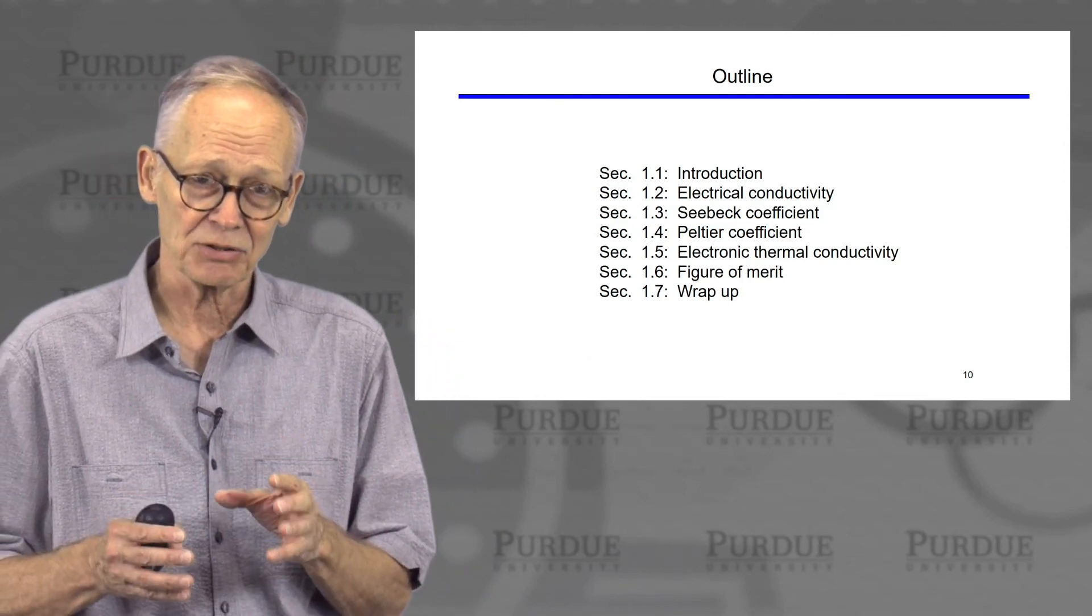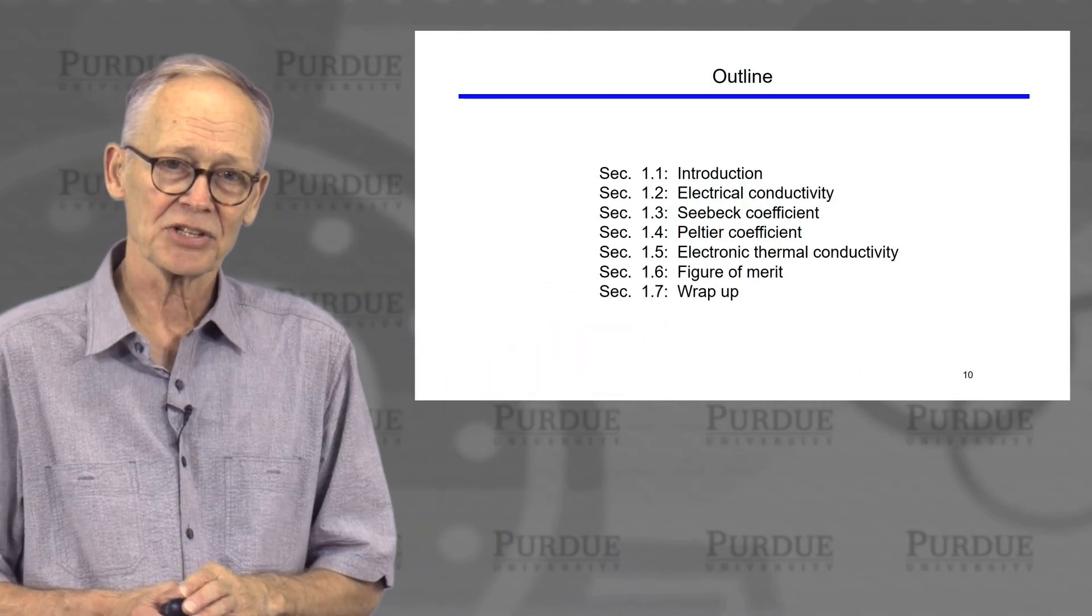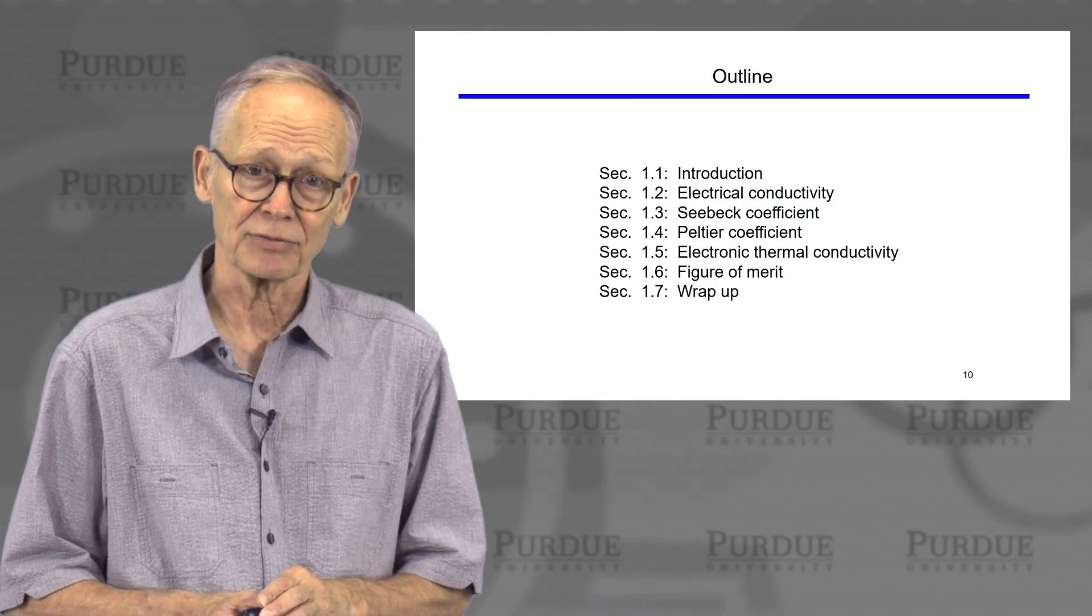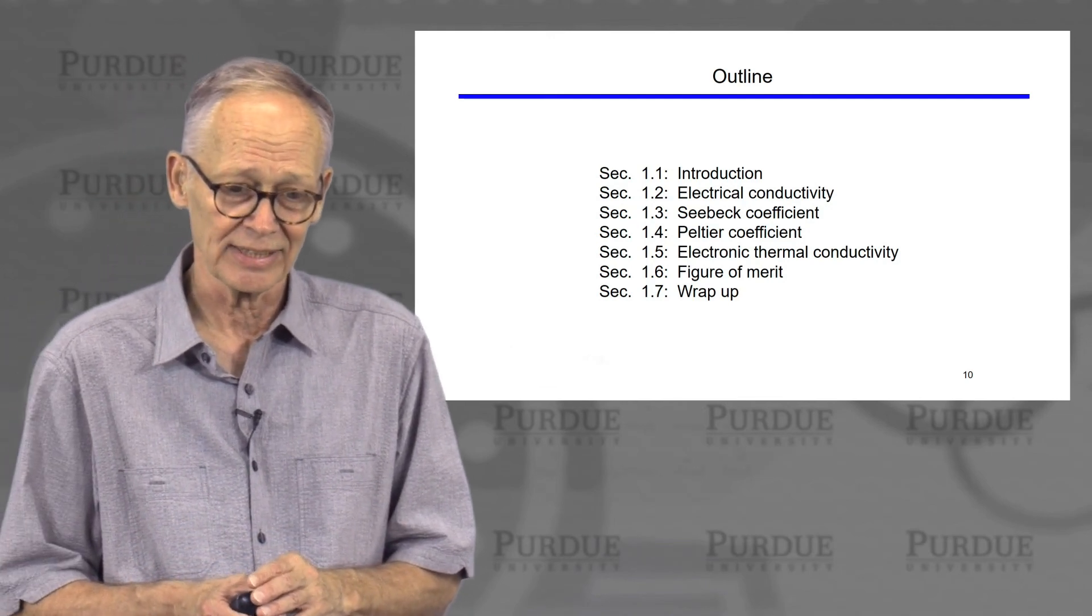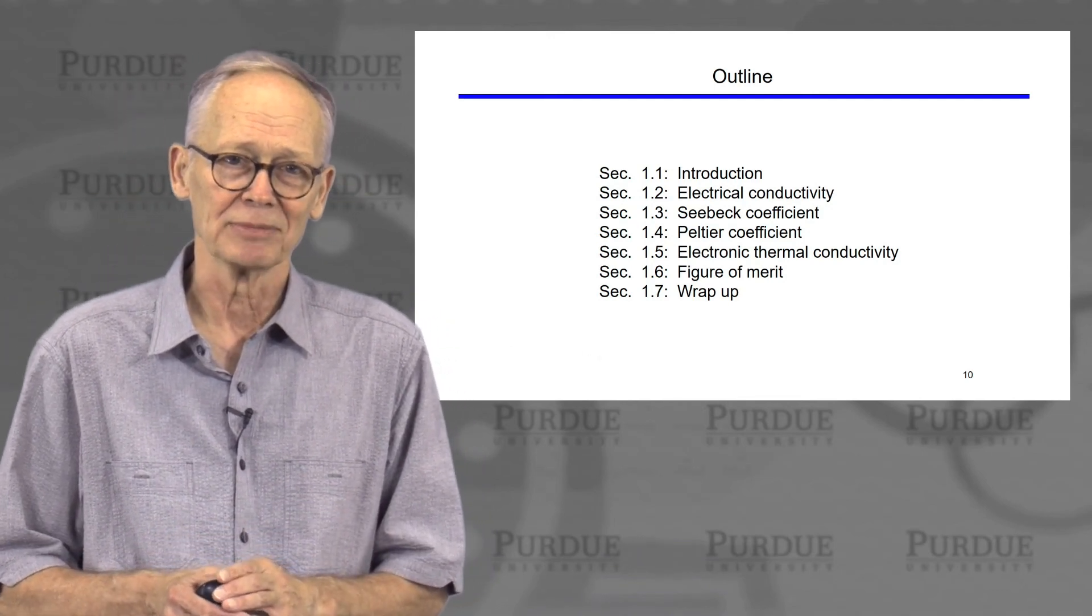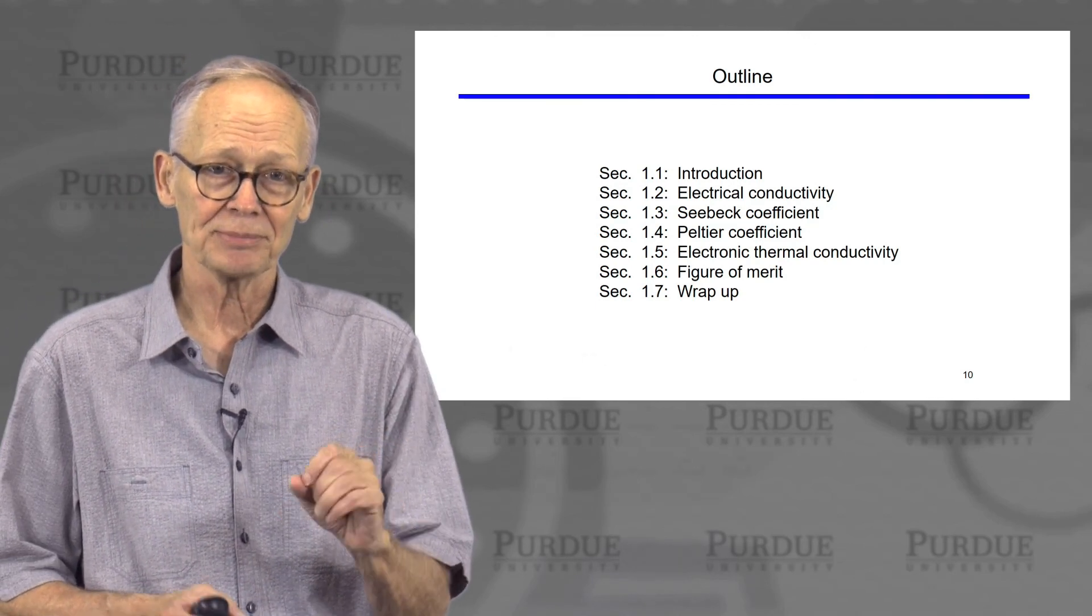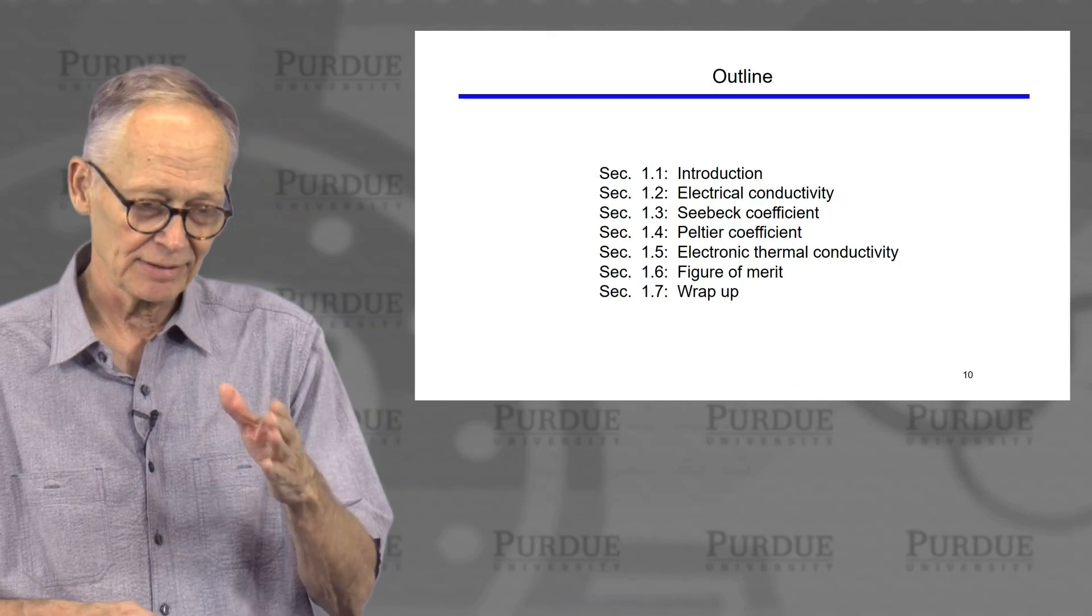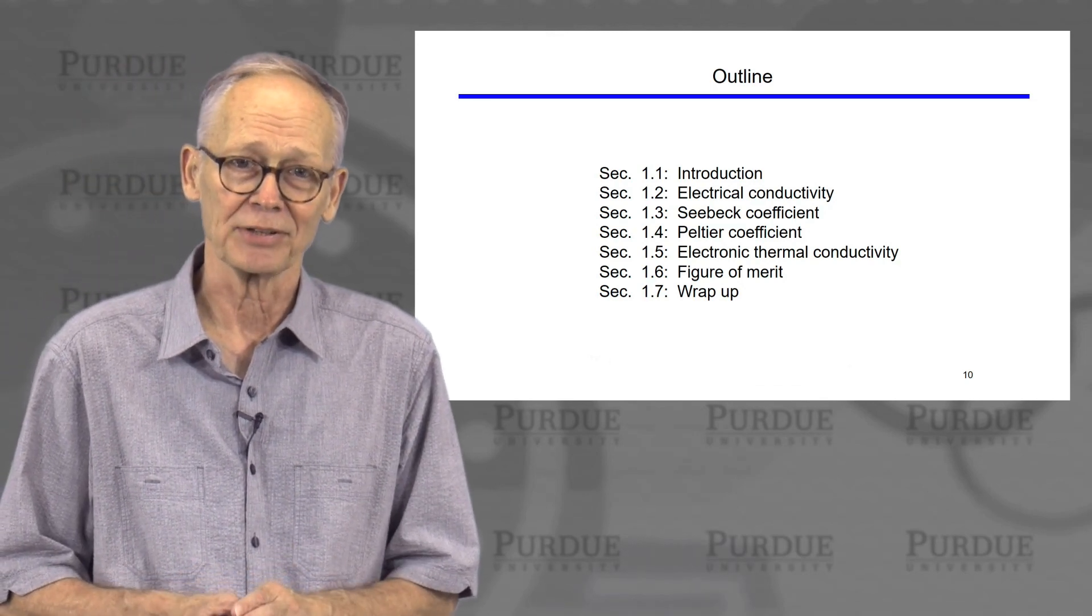That will complete the four electronic transport coefficients. Then we'll switch to a discussion of the figure of merit for thermoelectric materials, and we'll bring in the lattice thermal conductivity, and then we'll try to wrap it up and make all of the conclusions. So we'll go through this step by step, take a break after each step, and by the end you should have a good understanding of thermoelectric theory.